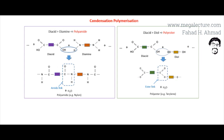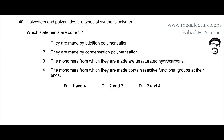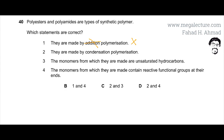We've now quickly revised what condensation polymerization is, so let's go back to the question. The first statement says they are made by addition polymerization — this is incorrect. They are not made by addition polymerization; they are made by condensation polymerization because water is produced in each reaction.